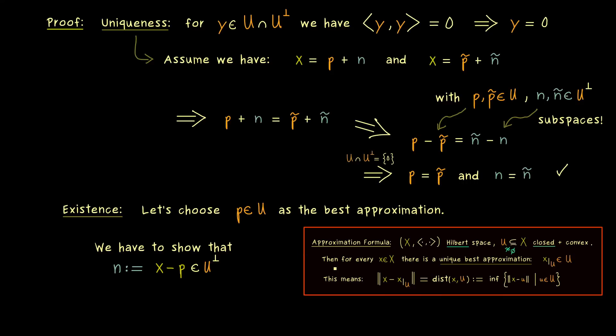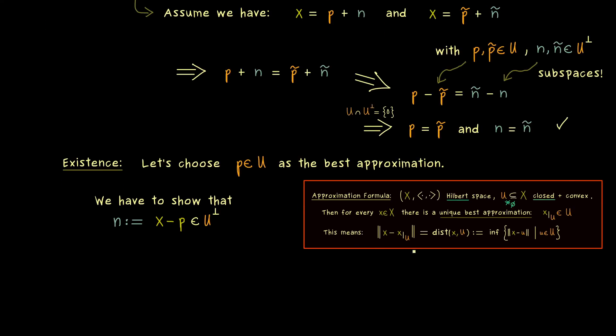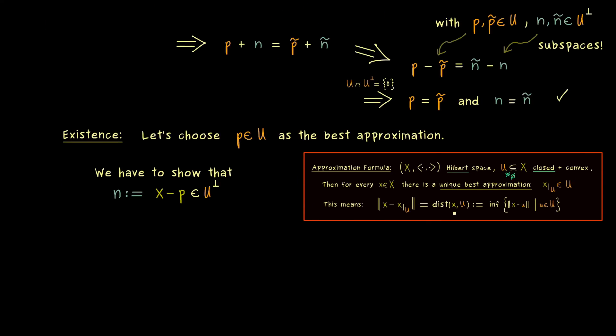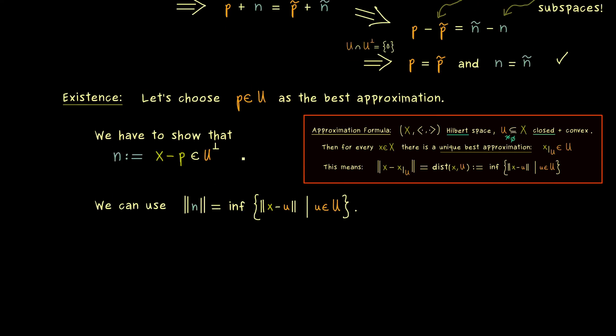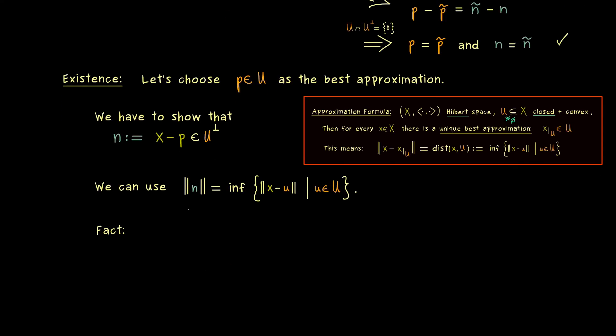And in fact, we already know by the approximation formula that the norm of n is the minimizing distance. And obviously, this is definitely a fact we should use. Ok, but now the question is, how can we use the distance to show orthogonality? And maybe the first connection we can see is that vectors with length 1 already span a whole subspace.